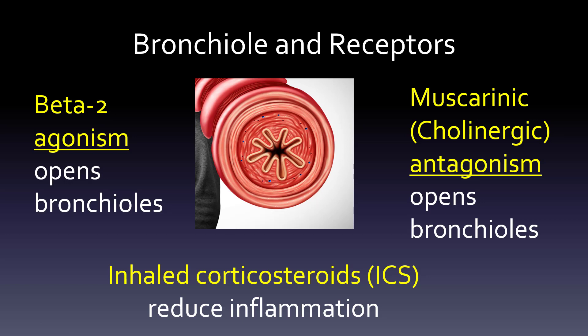Let's talk about how drugs work on the bronchiole and the receptors. On the left-hand side, we have beta-2 agonism — these open up the bronchioles. You might also hear adrenergic agonism, referring to the adrenal gland. On the right-hand side, we have muscarinic, or cholinergic, antagonism — also called anticholinergics or antimuscarinics. These also open up the bronchioles. So we have two completely different mechanisms — adrenergic agonism versus cholinergic antagonism — but both relax the bronchioles.